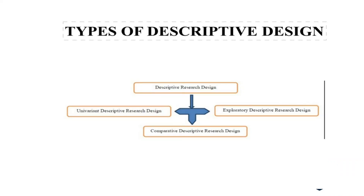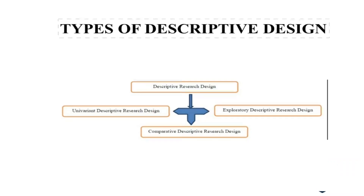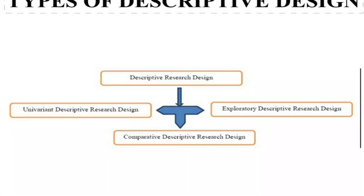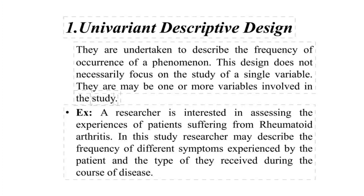The types of descriptive research design are: univariant descriptive research design, exploratory descriptive research design, and comparative descriptive research design — three types under descriptive research design.